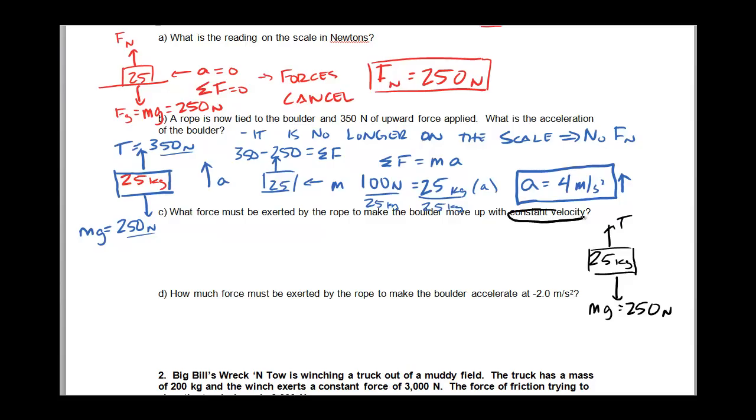But in this case, we need to move at a constant velocity. Well, constant velocity tells me that my acceleration is zero. Acceleration is zero tells me that my net force is zero. And when I see that, I know that my forces are canceled. So if I have 250 down, I've got to have 250 newtons up. That means the force exerted by the rope has to be 250 newtons.